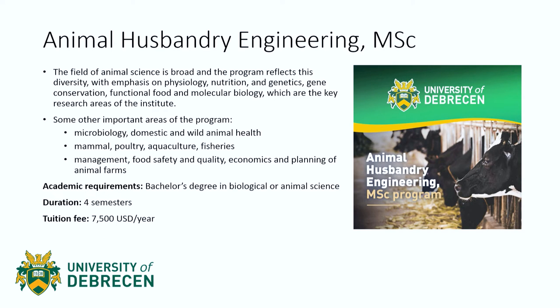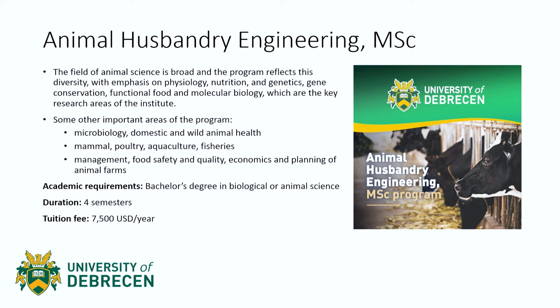The next program is animal husbandry engineering. The field of animal science is very broad, and the program reflects this diversity with emphasis on physiology, nutrition, genetics, gene conservation, functional food, and molecular biology, which are key research areas of the institute. Other important areas include microbiology, domestic and wild animal health, mammal, poultry, aquaculture, fisheries and management, food safety and quality economics, and the planning of animal farms. During my studies here, I've come into contact with many animal husbandry engineering master's students, who've told me about their research on animal farms — for example, their poultry work. The academic requirements are a bachelor's degree in biological or animal science. The duration is four semesters, and the tuition fee is $7,500 US dollars per year.